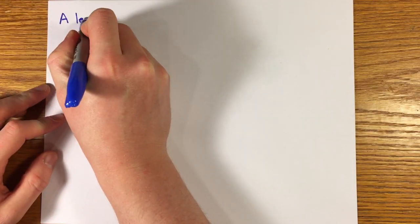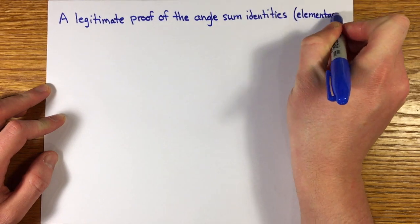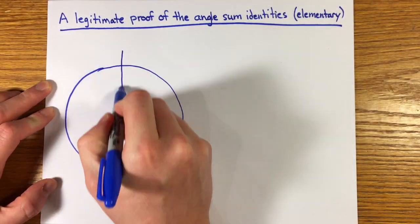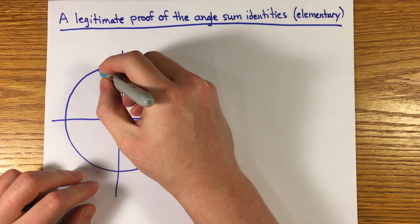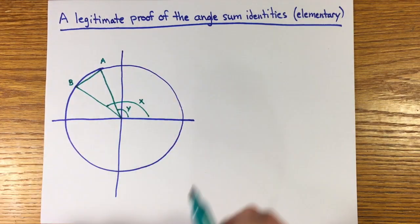The honest, non-circular way to establish the angle sum identities is to use elementary geometry of triangles. It's not calculus at all. Here's a very nice proof that comes right out of the appendices of Stewart's calculus.